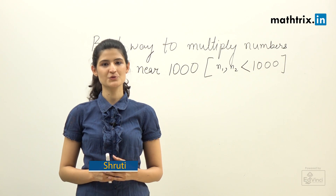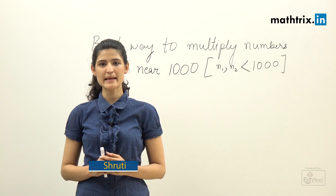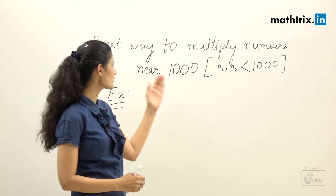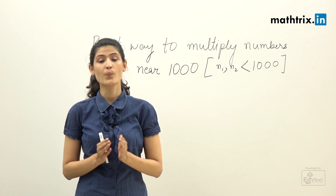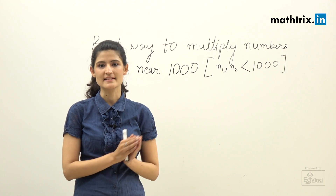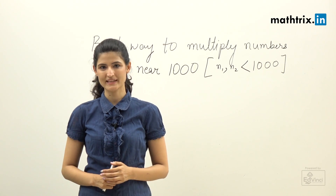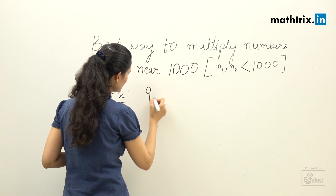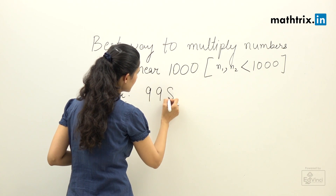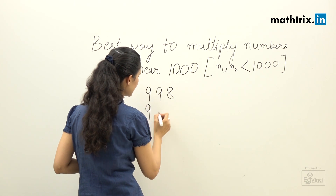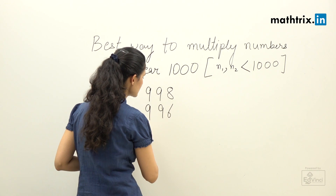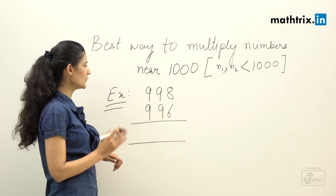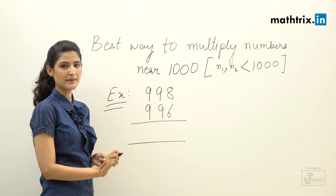Hello friends and welcome to speed math classes. In this episode I'm going to teach you how to find multiplication of numbers near thousand where both the numbers are less than thousand. Let's start with an example — we'll take 998 and 996.